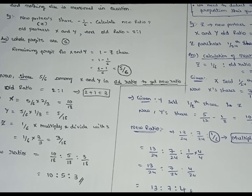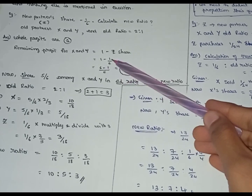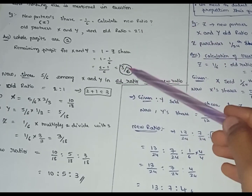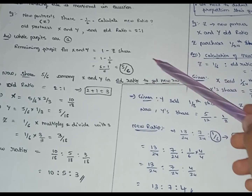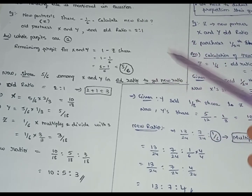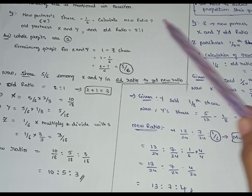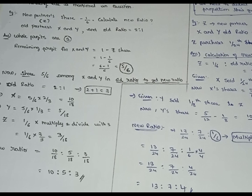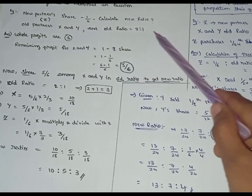The remaining share for X and Y is calculated as 1 minus 1 by 6, which equals 5 by 6. So the remaining share in profits for X and Y is 5 by 6. Out of 6 parts of profit, we give 1 part to Z, leaving 5 parts. Now we have to divide this remaining share and sacrifice accordingly.